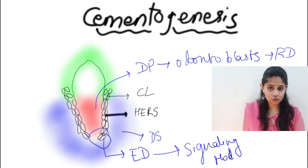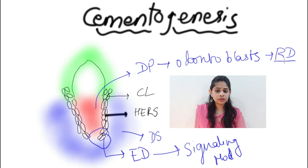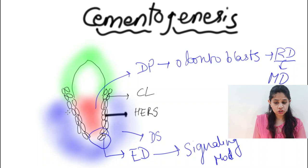The dentine first laid down by the odontoblasts is the immature dentine, also called the mantle dentine. Once the mantle dentine formation occurs, the next step involves the cells of the dental sac.